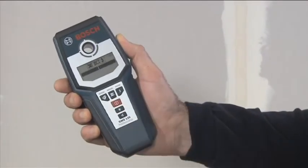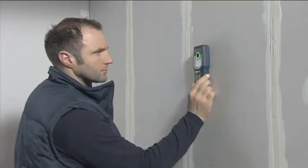You can use the GMS 120 Professional to detect wooden beams up to a depth of 3.8 cm in drywall mode.